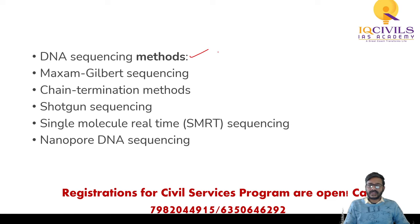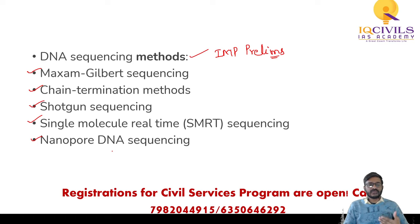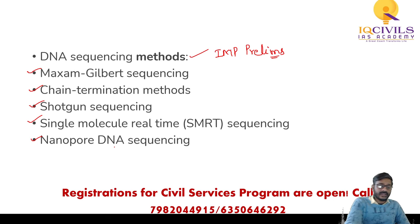The methods used in DNA sequencing are important for the preliminary examination. Number one: Maxim Gilbert sequencing. Number two: chain termination method. Number three: shotgun sequencing. Number four: single molecule real-time sequencing. Number five: nanopore DNA sequencing. You need not memorize these names in detail - just go through them once so if they appear in a preliminary examination you can easily identify them.